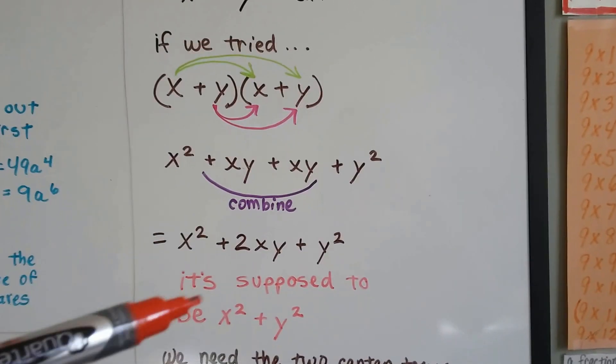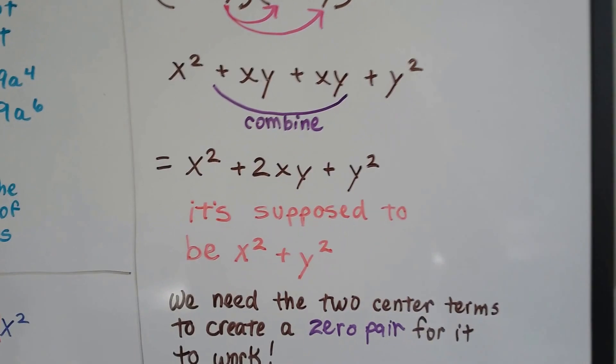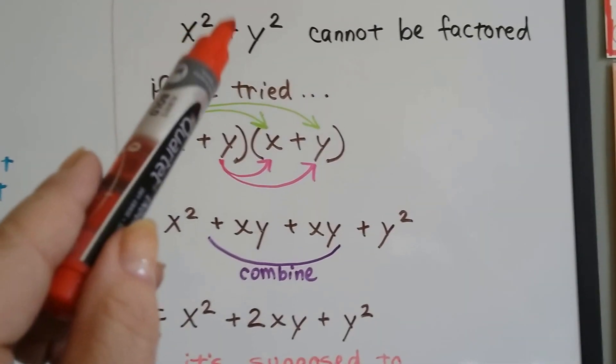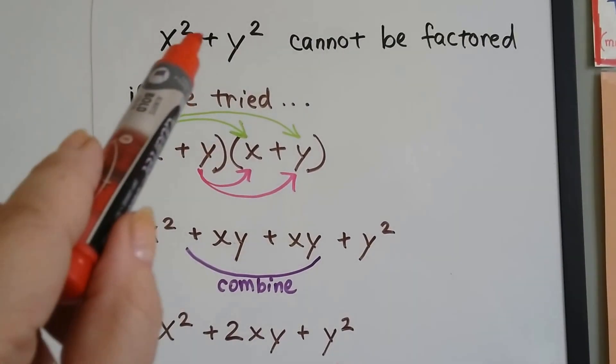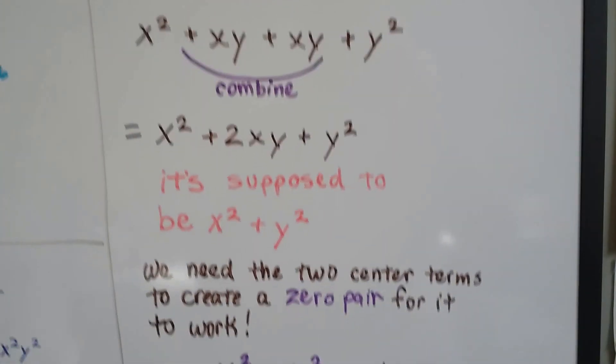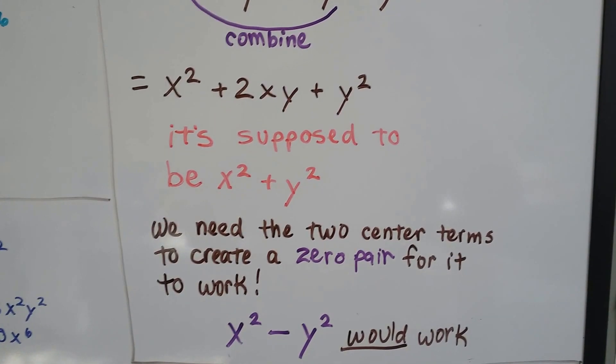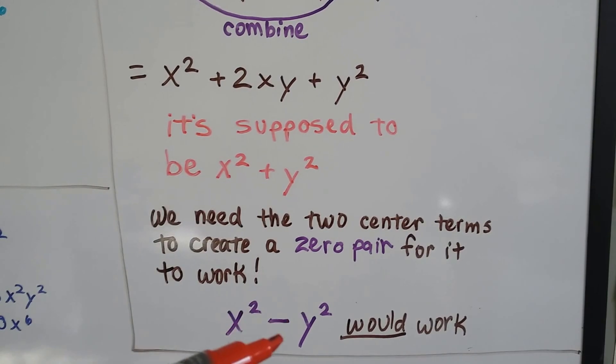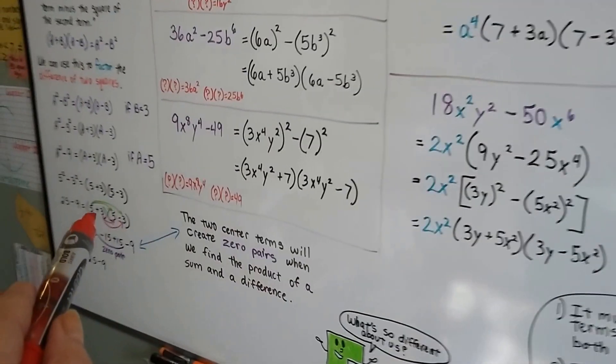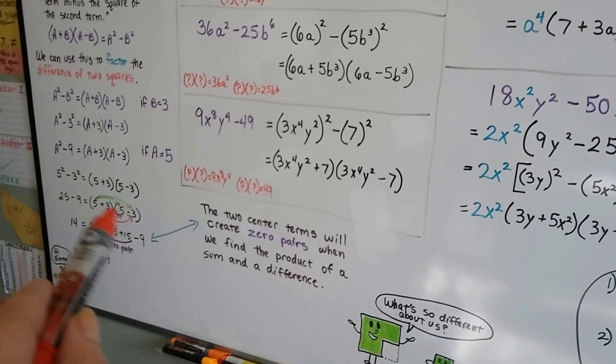It's supposed to be x²+y². So this can't be factored. See how it's got the plus sign in between there? We need the two center terms to create a zero pair for it to work to get back to a binomial. We need those two center ones to create a zero pair right there.